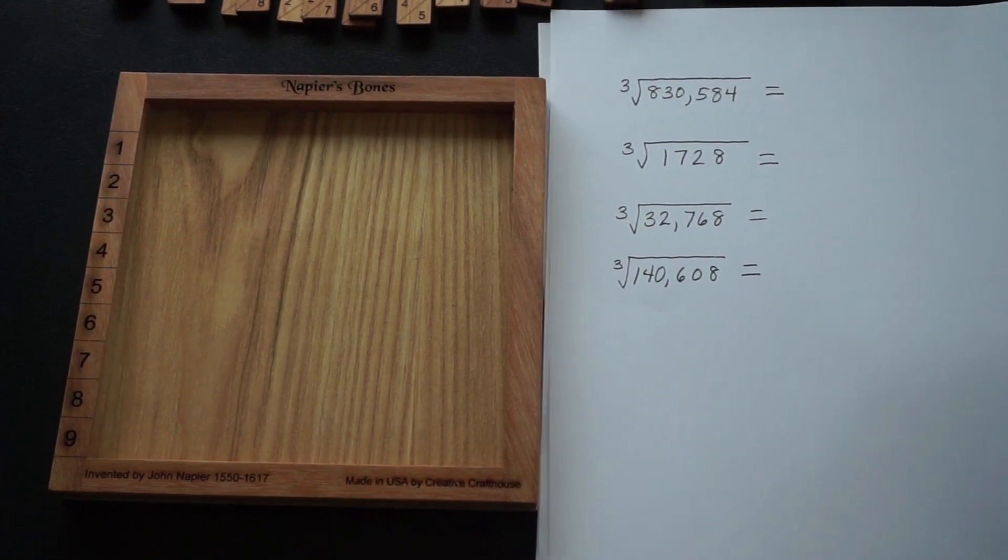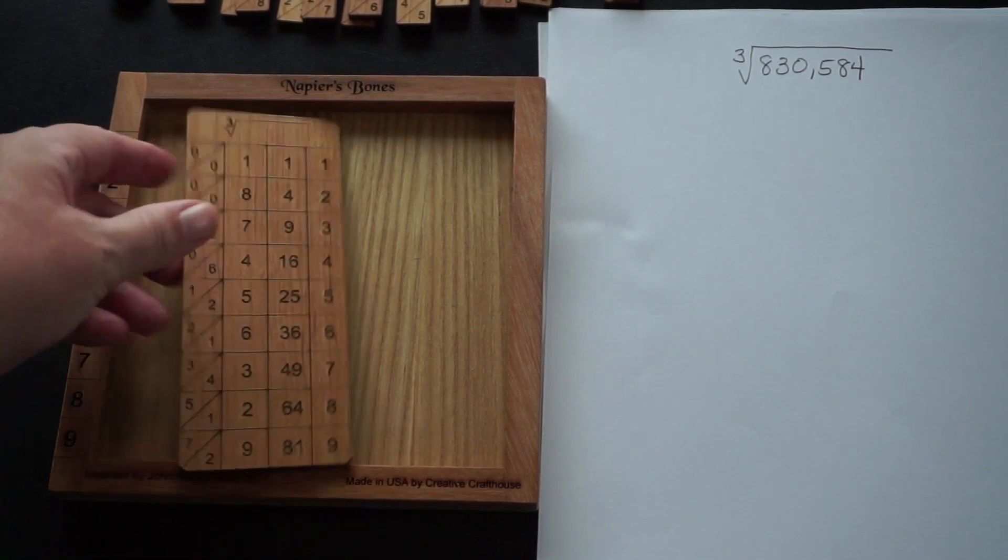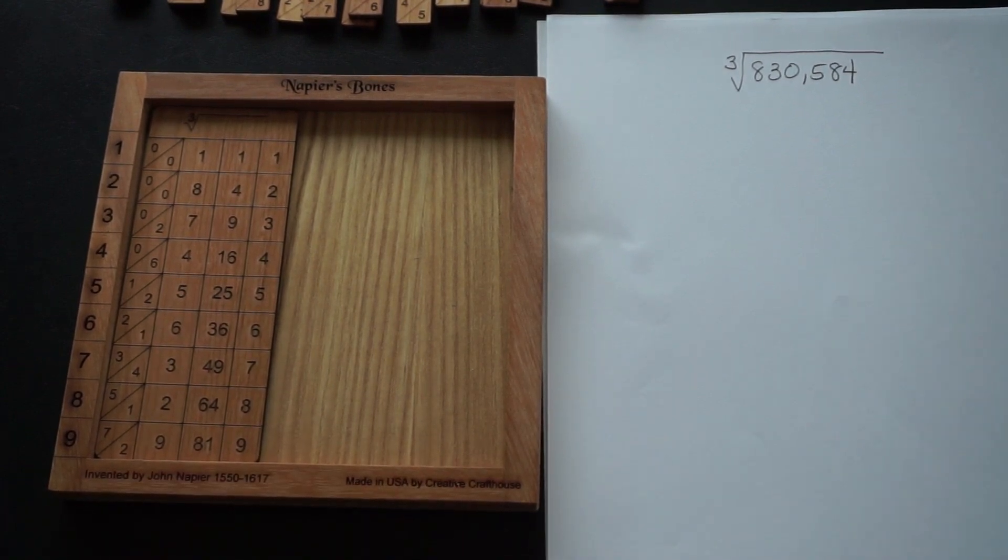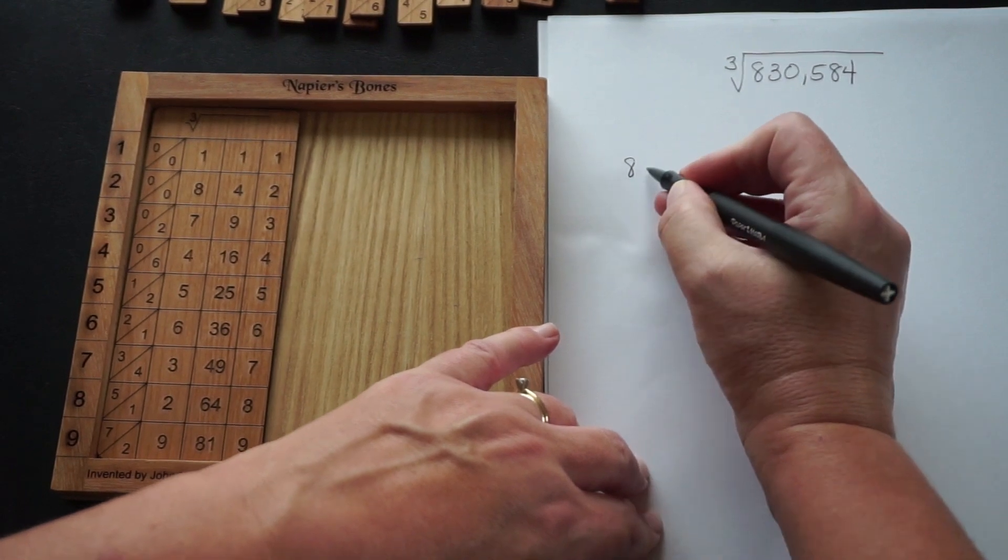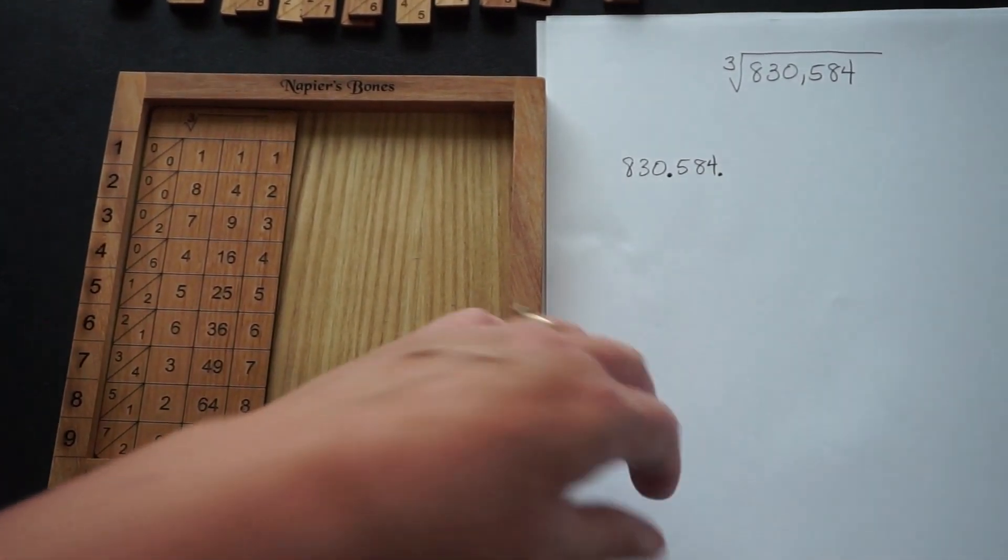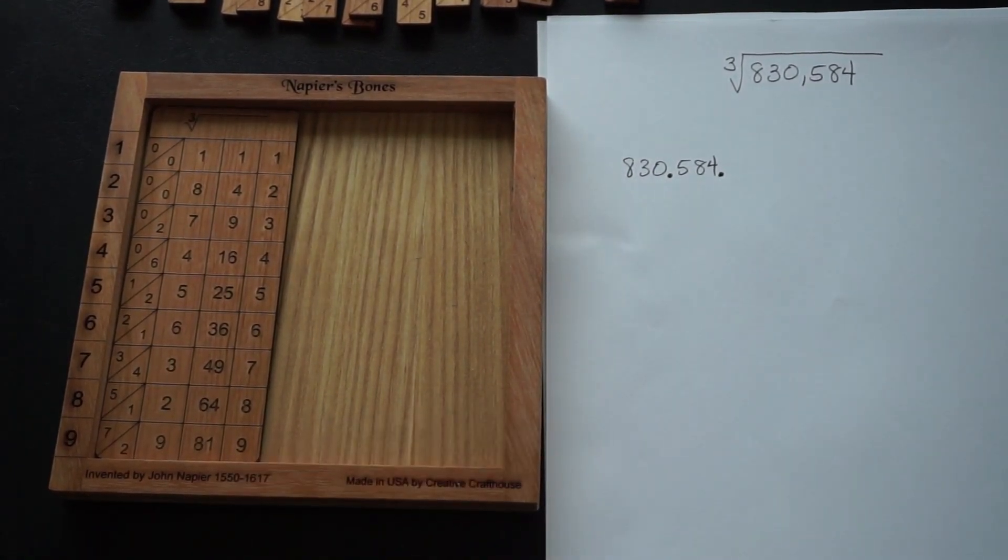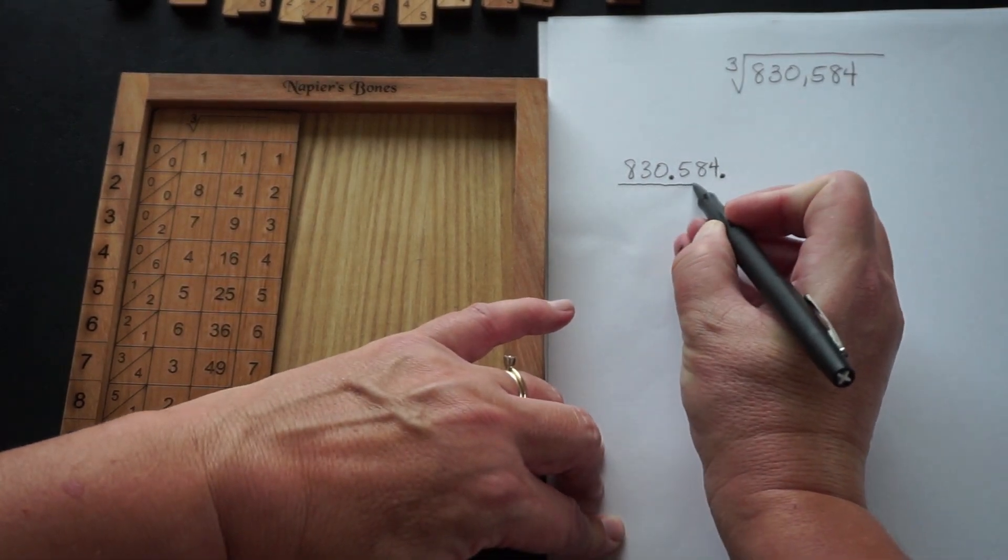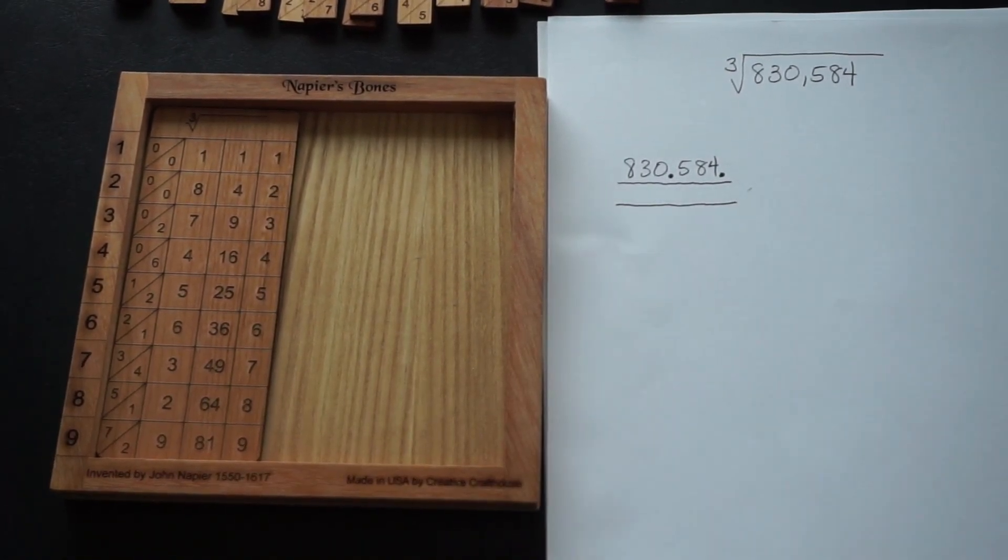The first example will be the cube root of 830,584. The first thing that we do is to use the cube root rod. Let me write this up in the way he would have written it. He would write the number 830,584 and split it into triplets starting at the back, breaking up the numbers into groups of three. Include the dot at the back. These are not decimal points; these are ways of separating numbers. Then draw a line beneath the number and another line beneath that, and our answer is going to appear in the space between those two lines.